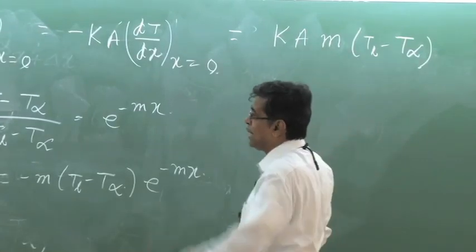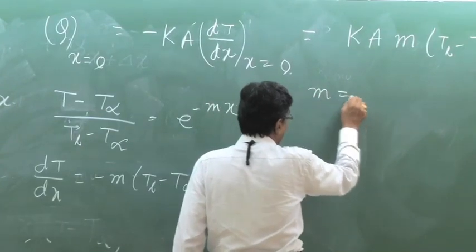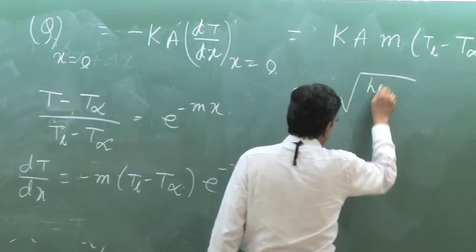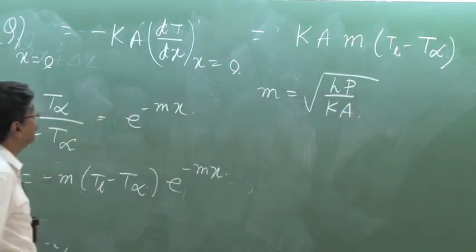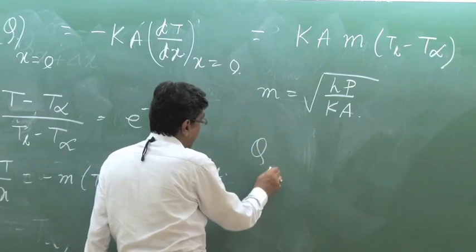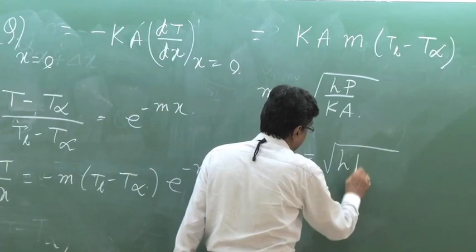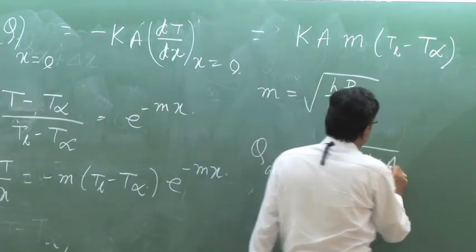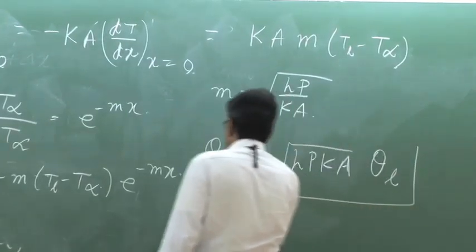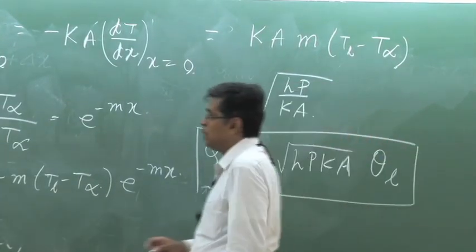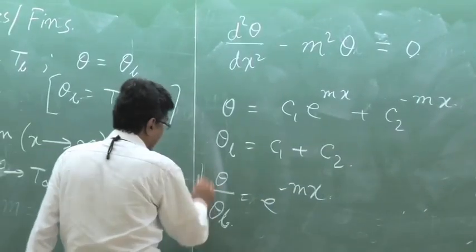Now m was defined as the square root of hP divided by kA. If we substitute that, then q at x equal to 0 becomes the square root of hPkA times (T_b minus T_infinity), which can be written as root of hPkA times theta_b. This is the heat transfer from the base, and theta/theta_b equals e^(-mx) is the temperature distribution.